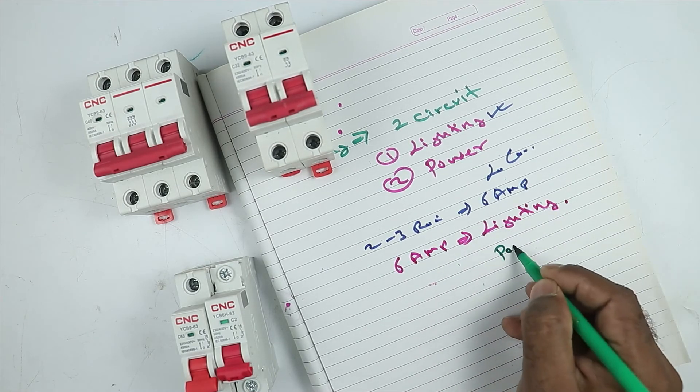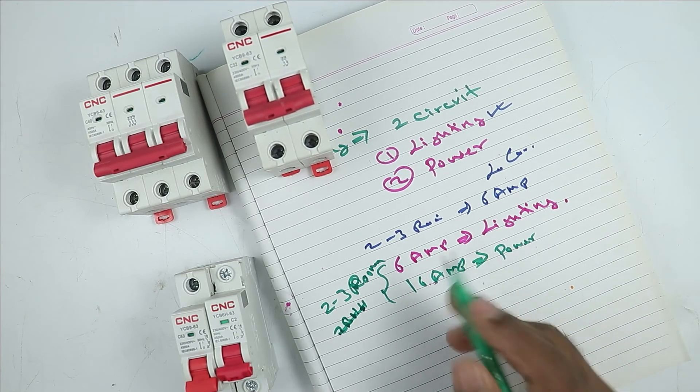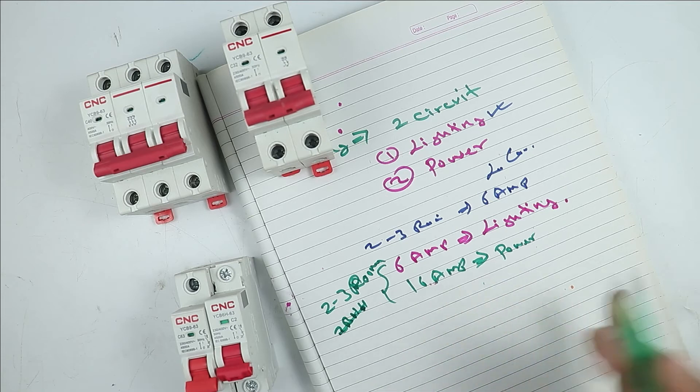After this, for power circuit, you have to connect 16 ampere MCB. If you have more rooms in your home, then you can use more MCB separately.